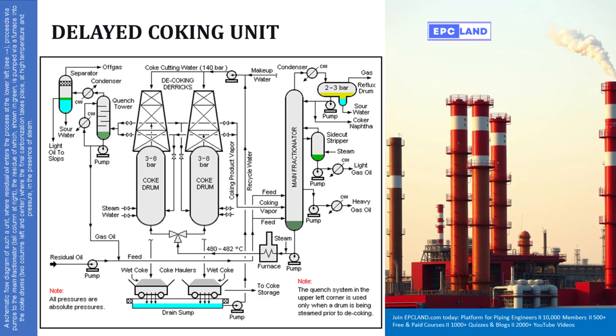Vapors? Yep. Coke stays behind as a solid and the lighter components vaporize. These valuable vapors then rise out the top. And where do they go? They head straight over to the main fractionator. Think of it as a big distillation column. It runs at a slightly lower pressure, maybe 2 to 3 bar.